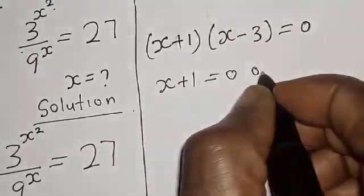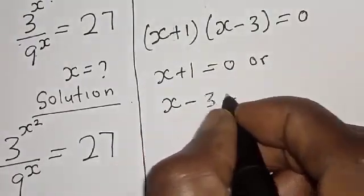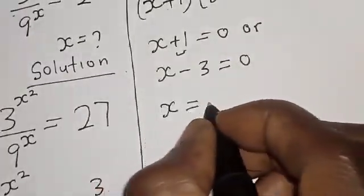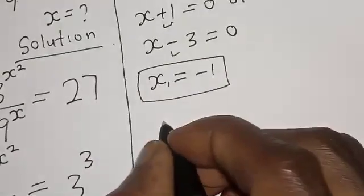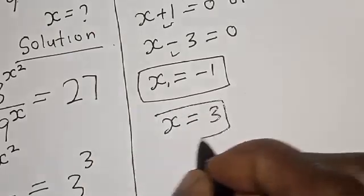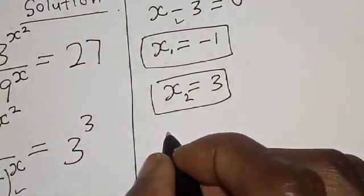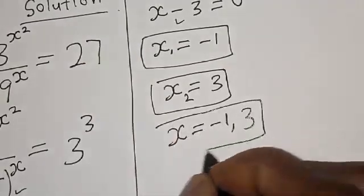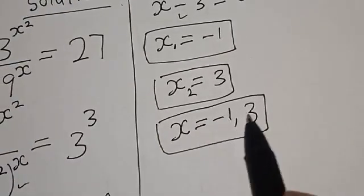Setting each factor to zero: s plus 1 equals 0, giving s equals minus 1 (that is s₁); and s minus 3 equals 0, giving s equals 3 (that is s₂). Therefore, the values of s are minus 1 and 3. That is our final answer. If you loved the class, please like, share, comment, and subscribe. Thank you.